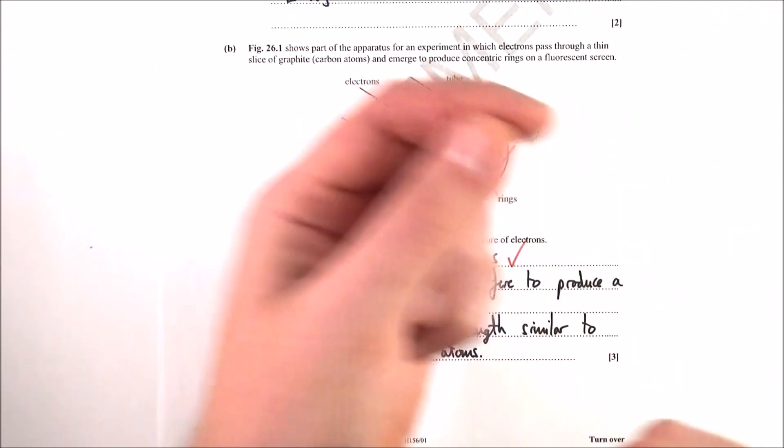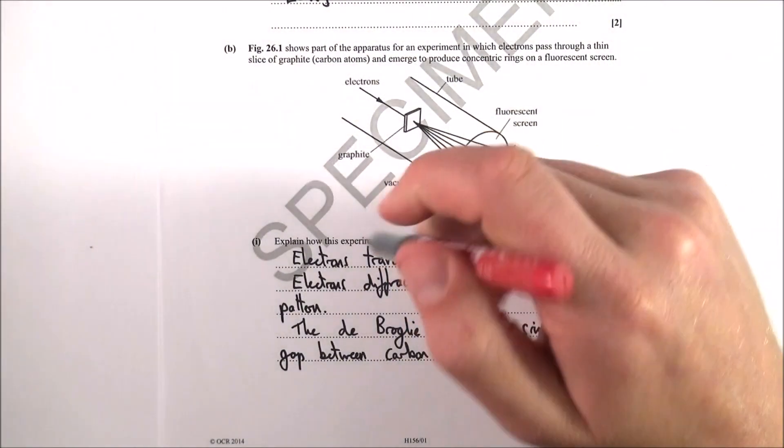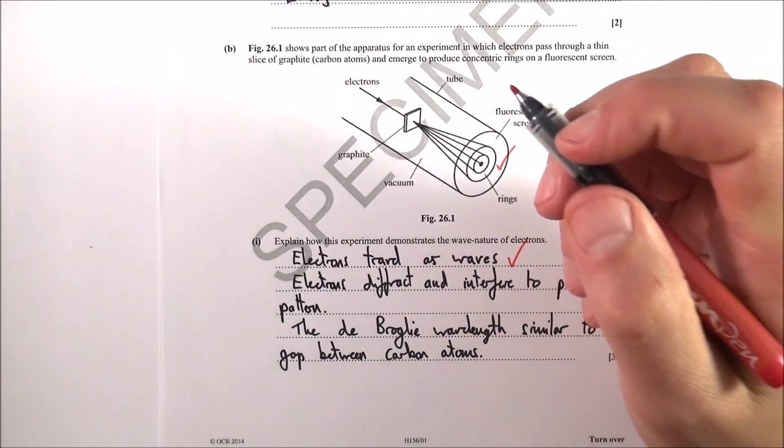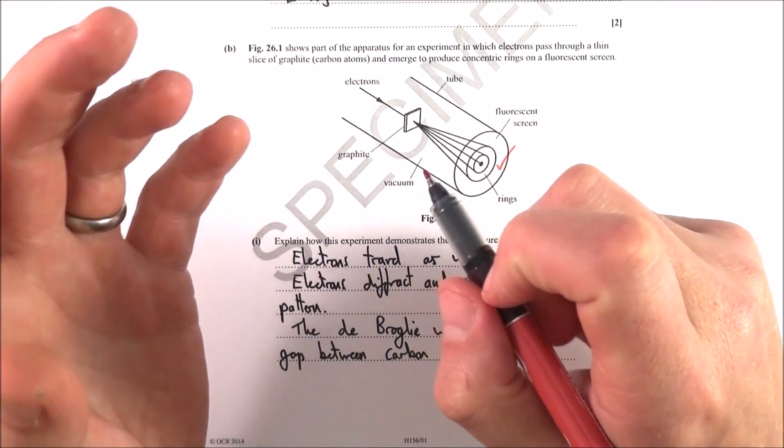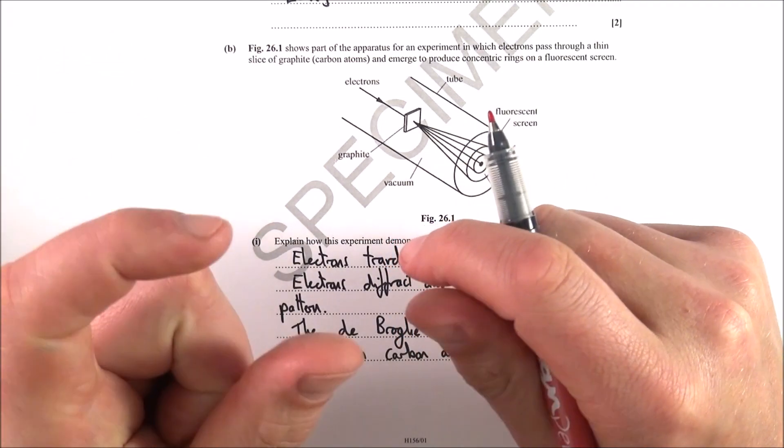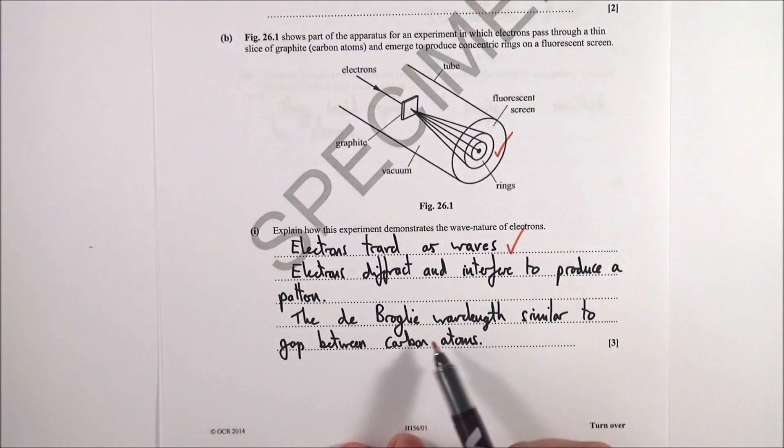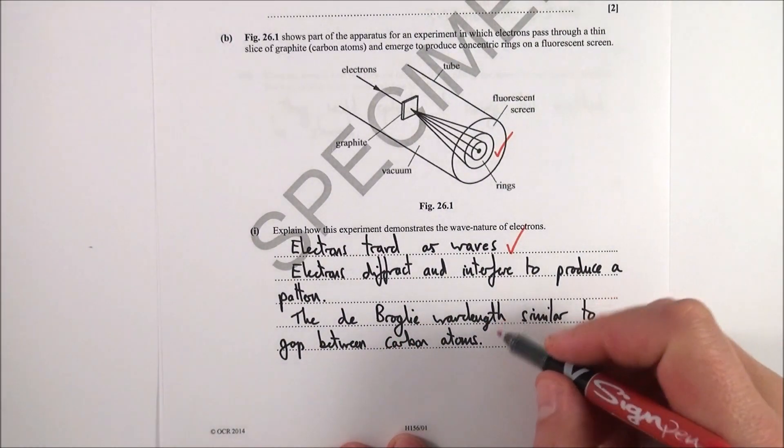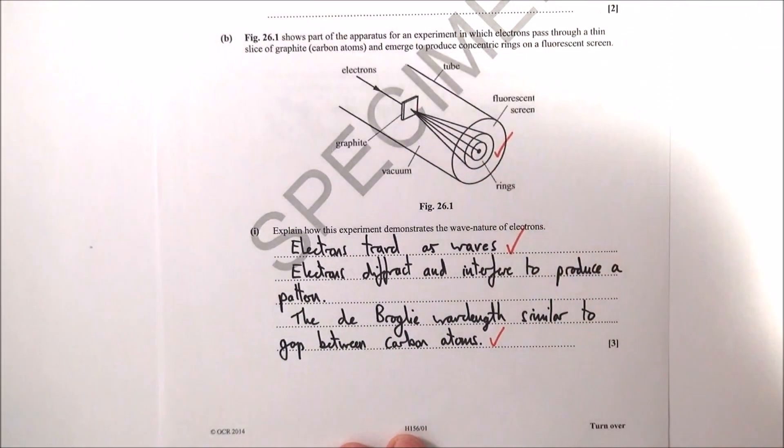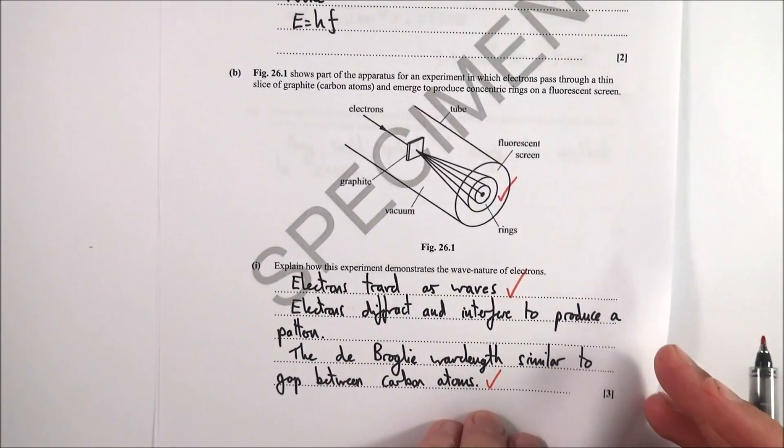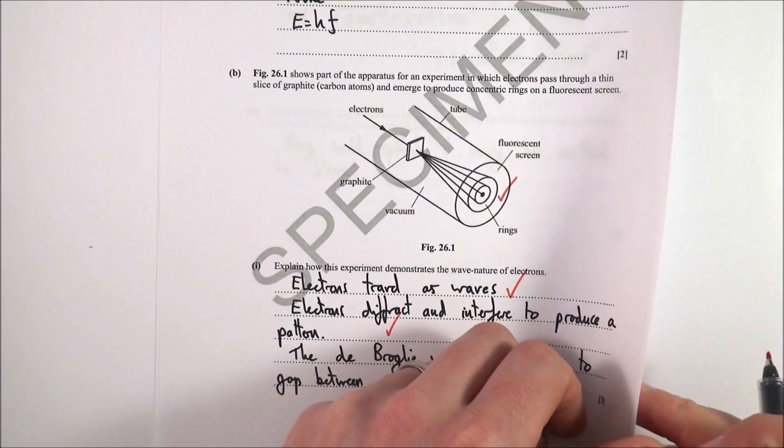Why do they diffract? You always have maximum diffraction when the wavelength is equal to the gap. In this case, the de Broglie wavelength is similar to the gap between the carbon atoms in the graphite. So that gets three marks.